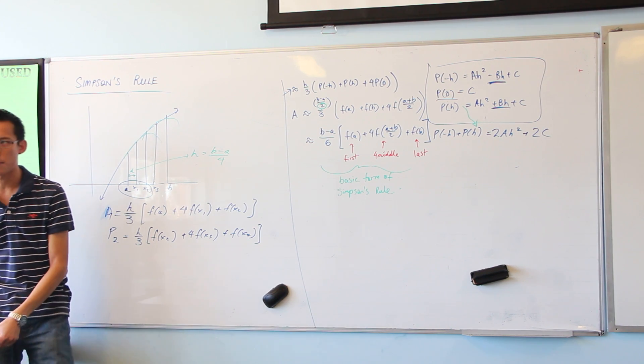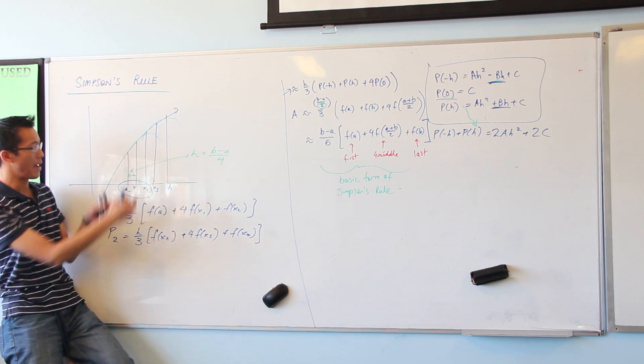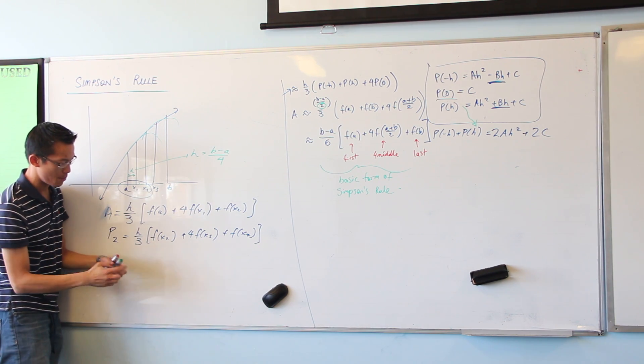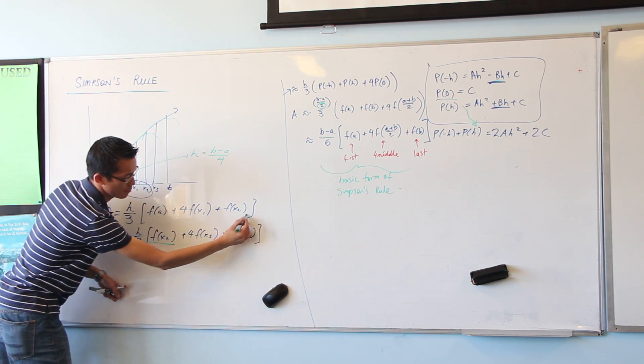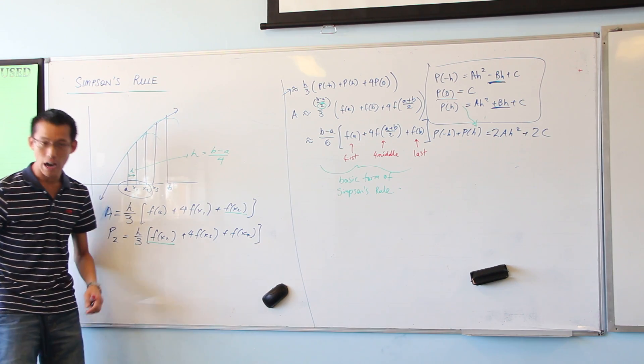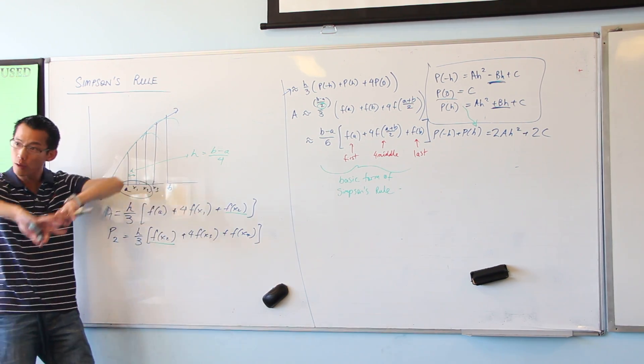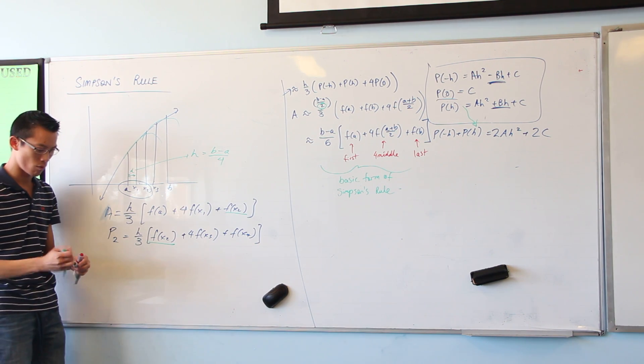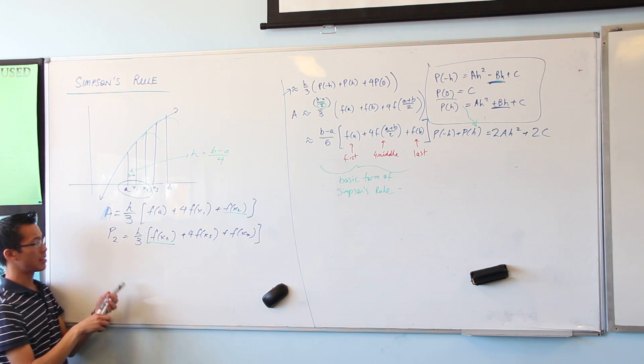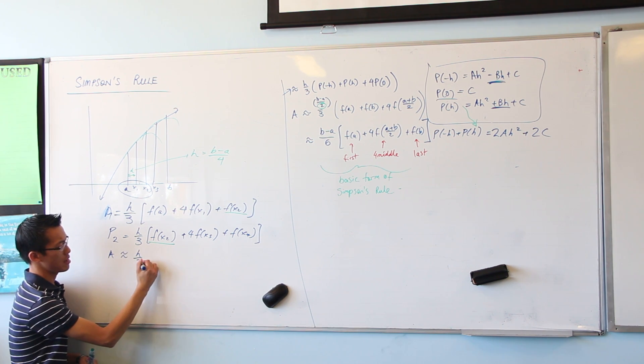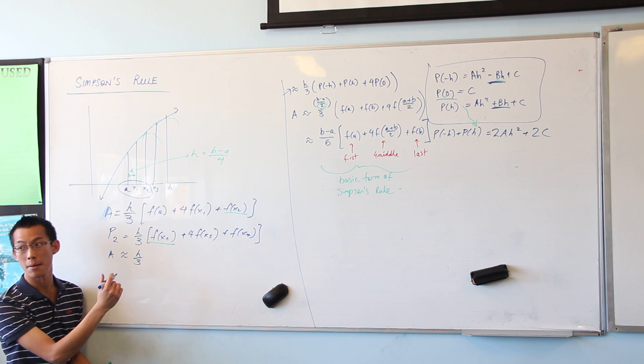Now, just like with trapezoidal rule, because our parabolas are sitting on top of one another, as it were, you're getting this same doubler, F of X2. The fours don't double up. It's these ones here. So if I were to put this whole lot together, what would you end up with? Well, you would say, the entire area is approximately equal to, H on three is common, out the front.